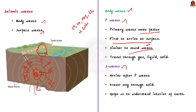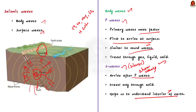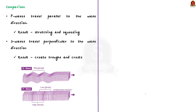P waves can travel through gas, liquid and solid material. S waves, or secondary waves, arrive at the surface after P waves and are slower. S waves are shear waves and can travel only through solid material — this characteristic helps us understand the interior of the earth. Comparing the two: P waves vibrate parallel to the wave direction, causing stretching and squeezing of material — they are longitudinal in nature. S waves vibrate perpendicular to the wave direction, creating troughs and crests — they are transverse in nature.